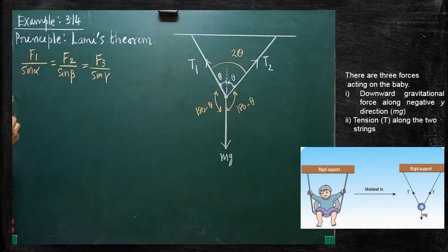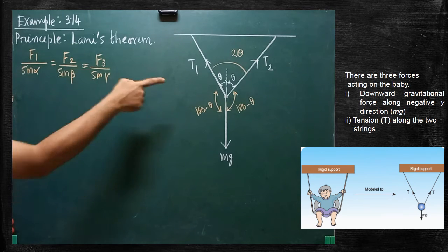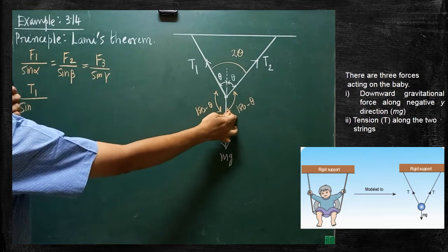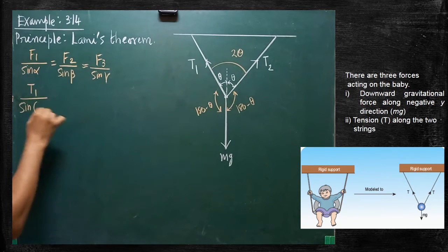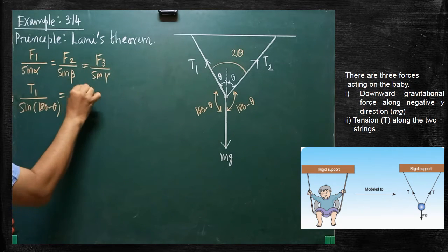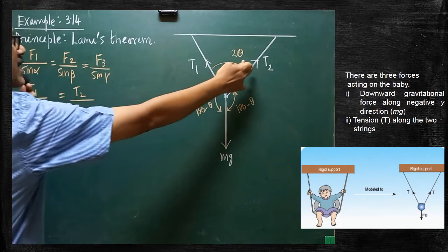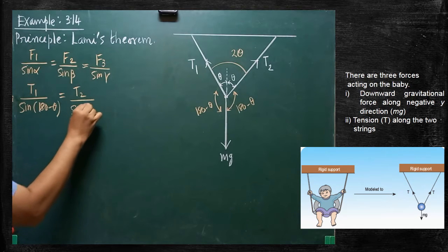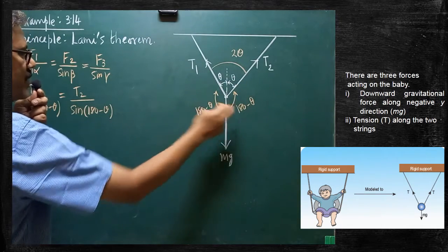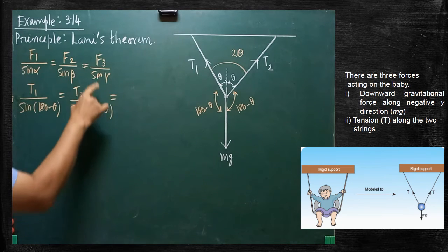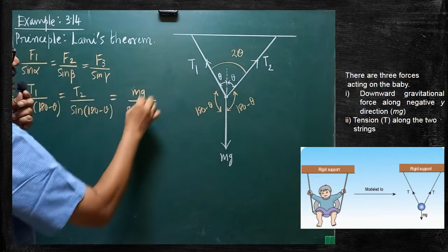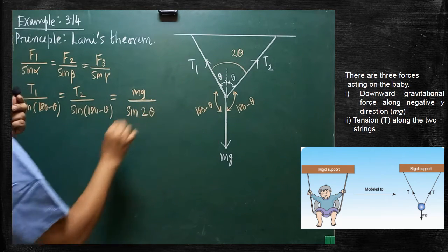According to this diagram, we have to write the equation. Instead of F1, we write T1 divided by sin(180 minus theta). Instead of F2, we write T2 divided by sin(180 minus theta) — which is the opposite angle of T2. Equal to F3, the third force Mg, divided by sin gamma. The opposite angle of Mg is 2 theta. So Mg is divided by sin 2 theta.